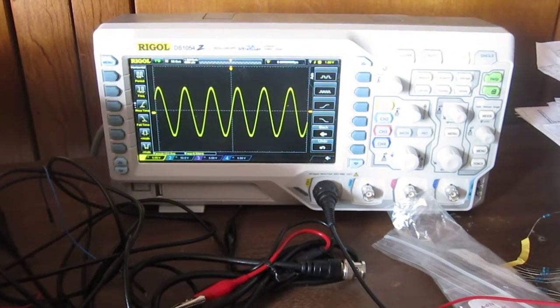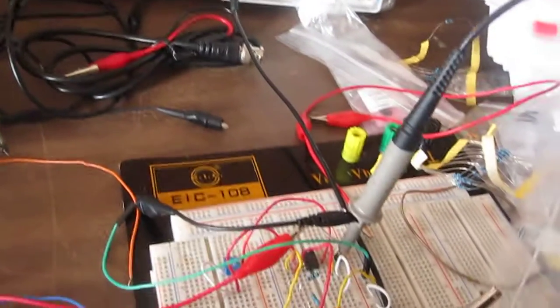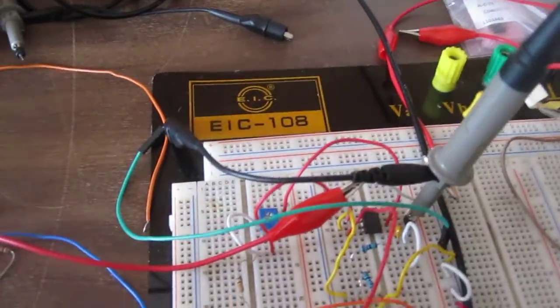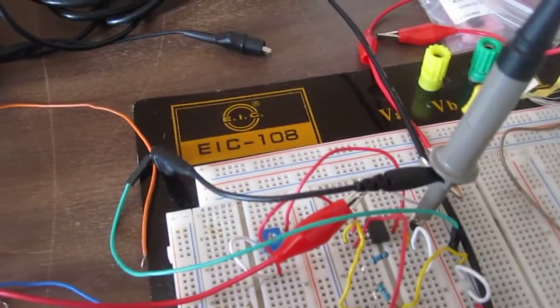Hey guys, this is a Wien Bridge oscillator circuit built using LM741 op-amp chip. This circuit is composed of a few resistors and capacitors as well as a potentiometer.